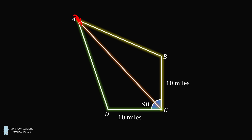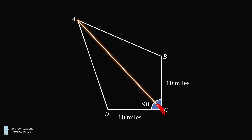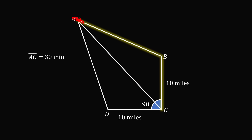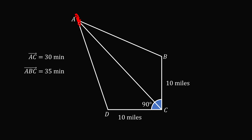You are given the times of these travels. If the car goes from A to C, the car will take exactly 30 minutes — the car is going at a constant speed for all cases. If the car takes the path A to B to C, it takes an additional 5 minutes, so ABC takes 35 minutes. Finally, the car going A to D to C takes an additional 5 minutes, so A to D to C is equal to 40 minutes.